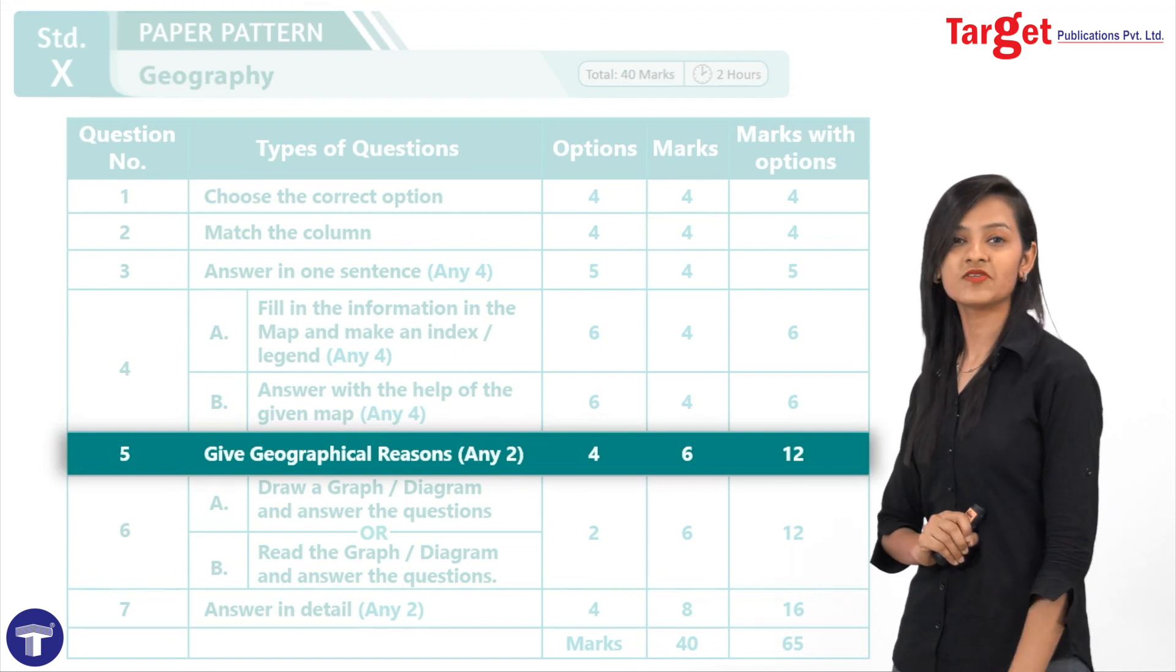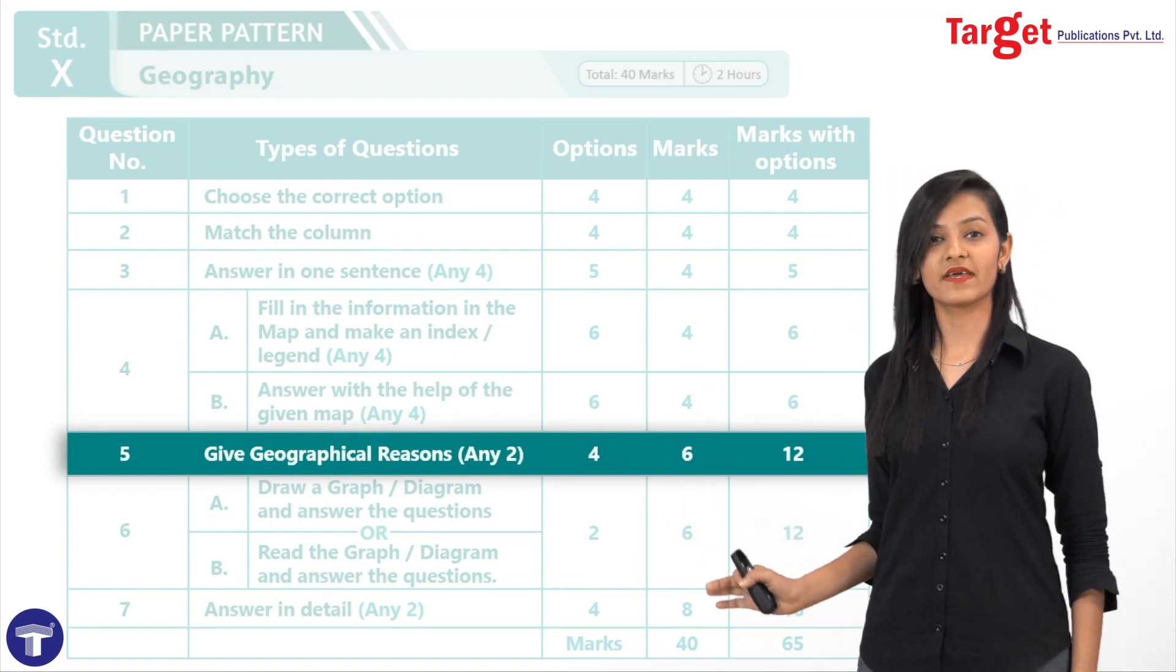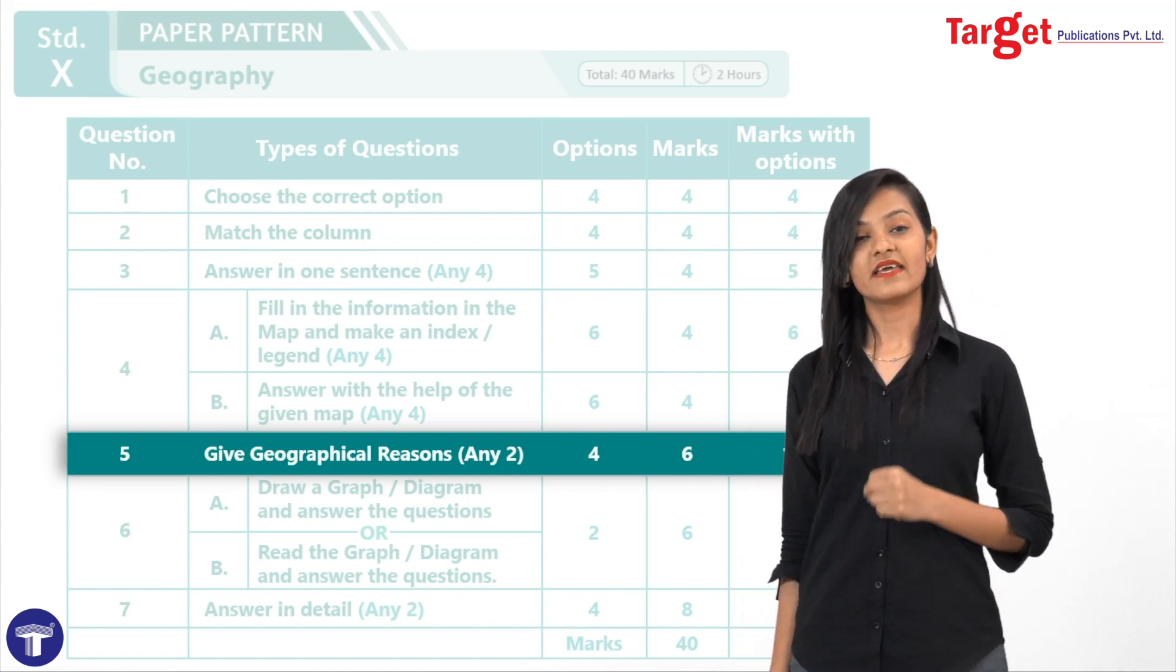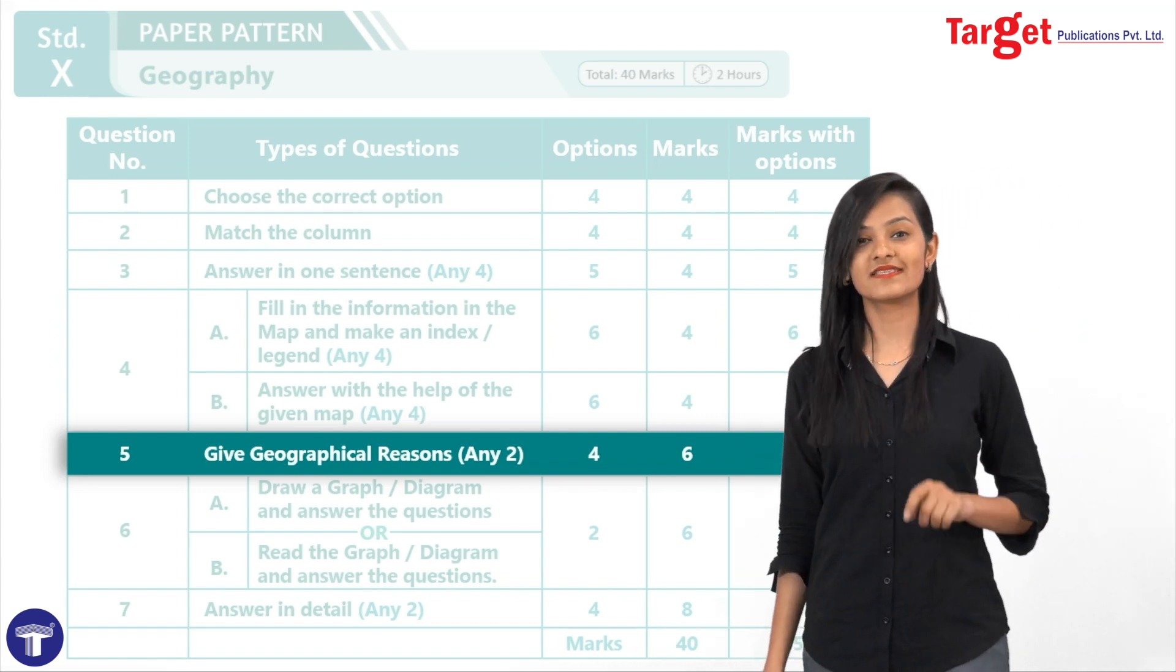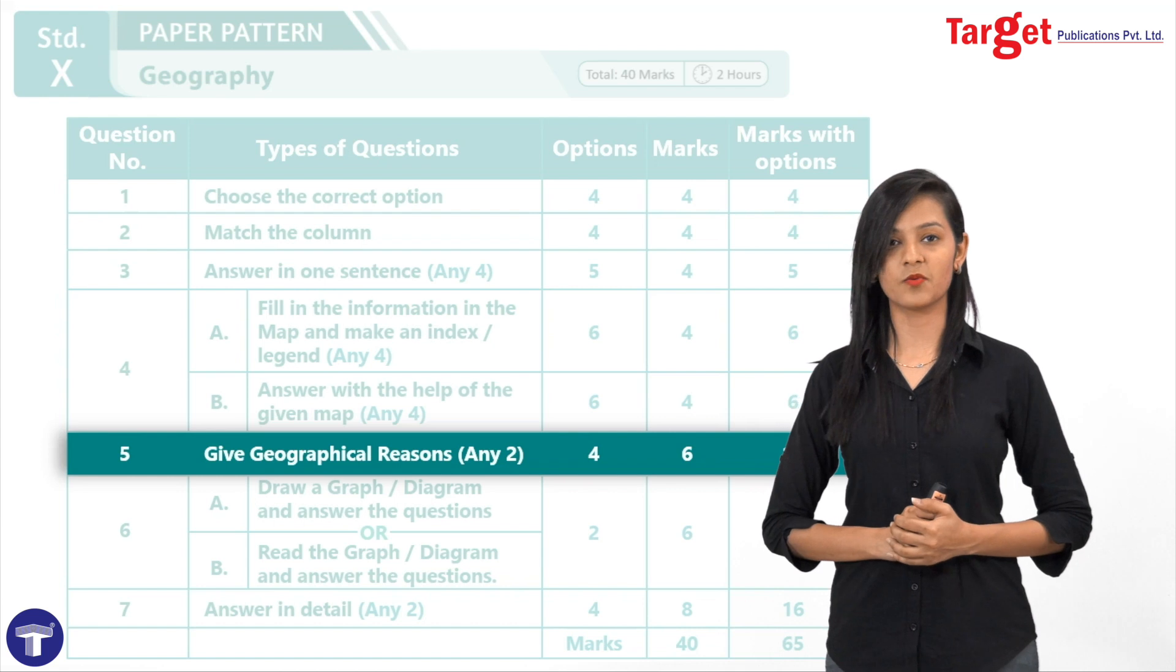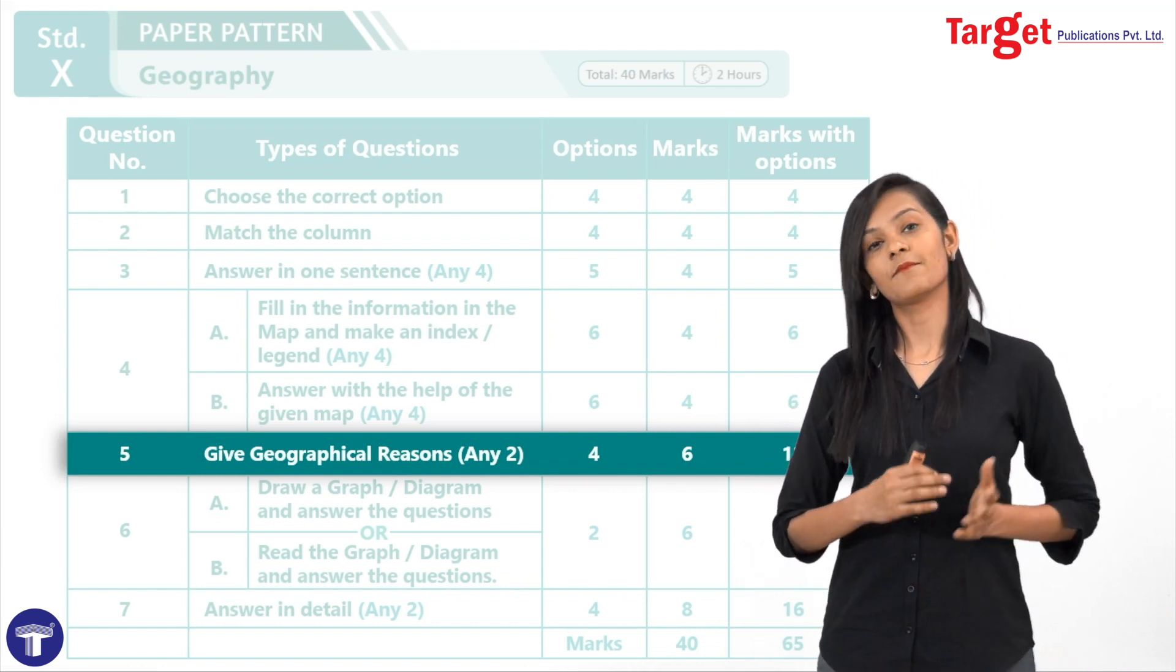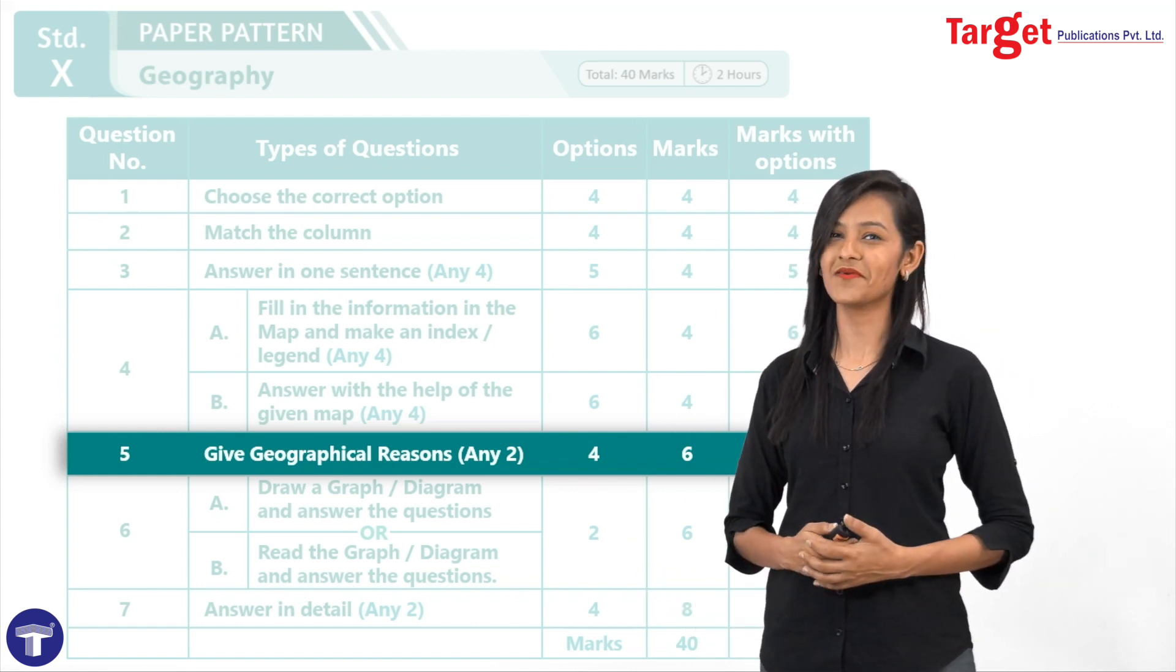Next is, question number 5, give geographical reasons. Here, you will be given 4 questions, of which, you will have to answer any 2. And, each question is for 3 marks each. Total of 6 marks are allotted to this question. In Target notes, we have not only covered textual key reasons, but as well, we have given extra questions, so that you get more practice.